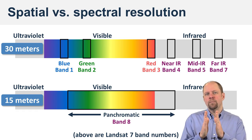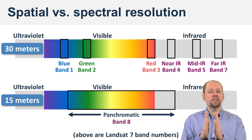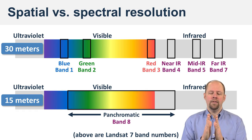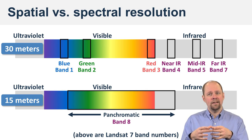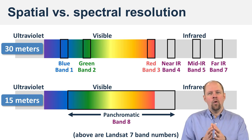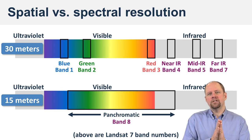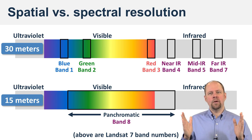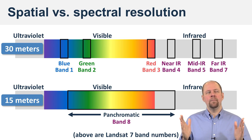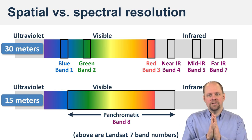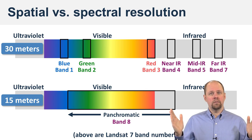Now, what if we want a much smaller cell — a much higher spatial resolution? That means we have a much smaller square on the ground, and there'll be less light because it's a smaller square. So if we have less light, the strategy used here is to use a much wider band of the spectrum in order to capture that light and be able to record it.